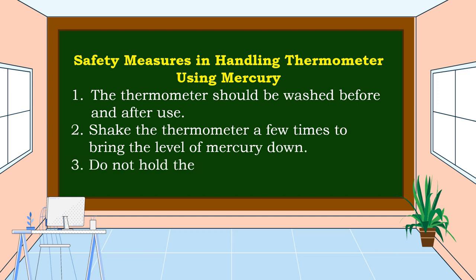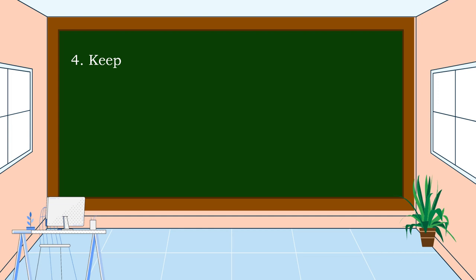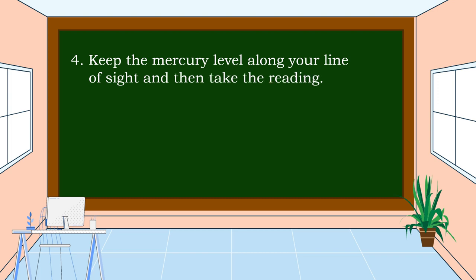Number three: do not hold the thermometer by its bulb. Number four: keep the mercury level along your line of sight and then take the reading. Number five: handle the thermometer with care.